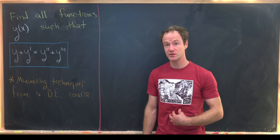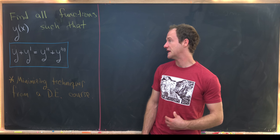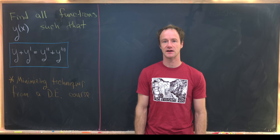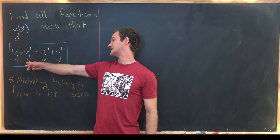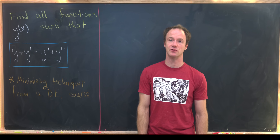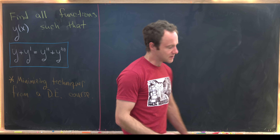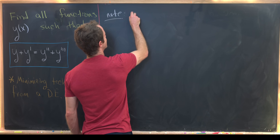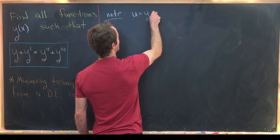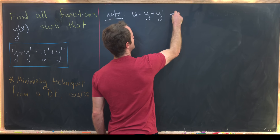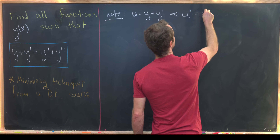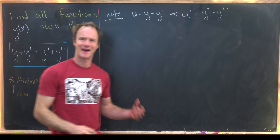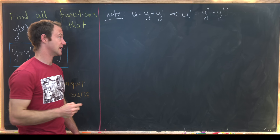The first thing to notice is that the left hand side is related to the right hand side — in fact, if you take the second derivative of the left hand side you get the right hand side. So let's note that: if we set u equal to y plus y prime, then u double prime equals y double prime plus y triple prime, just by how higher derivatives are defined.